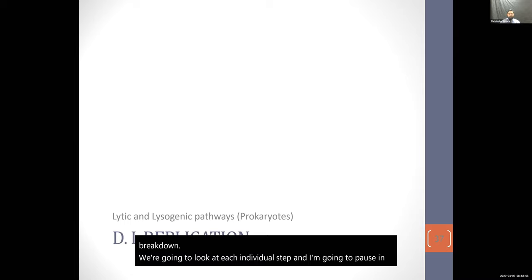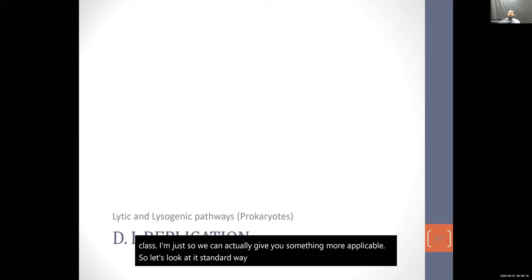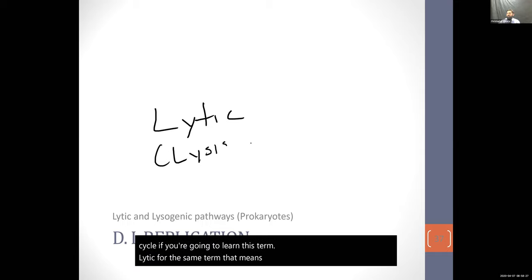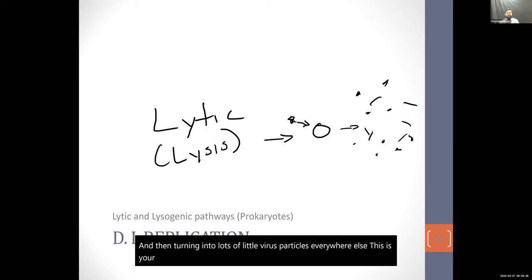This is what we call the lytic cycle — 'lytic' comes from the same root as lysis. The virus gets inside the cell and blows it up, releasing lots of little virus particles everywhere. This is your basic lytic cycle — it destroys the entire host.